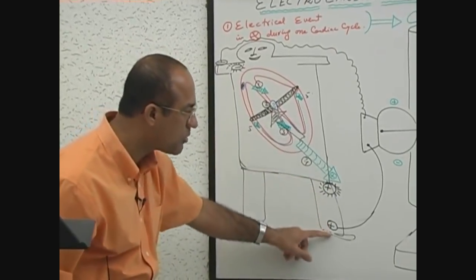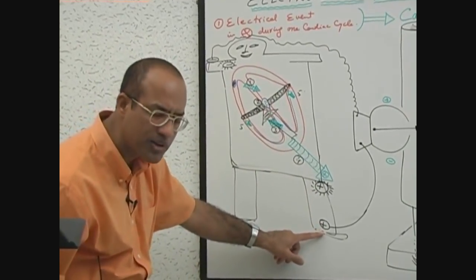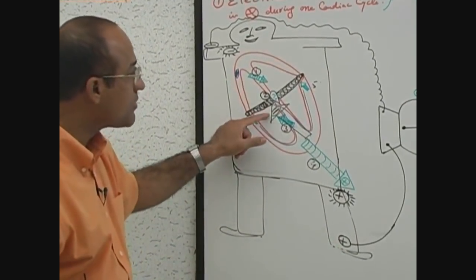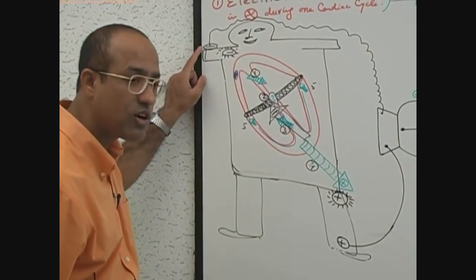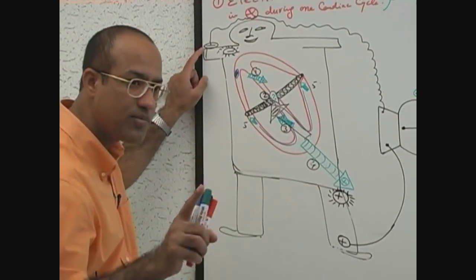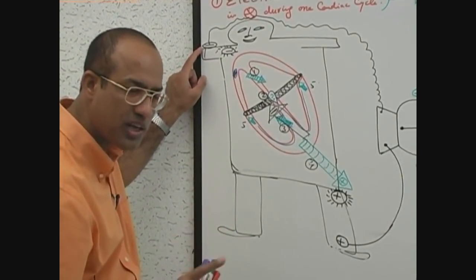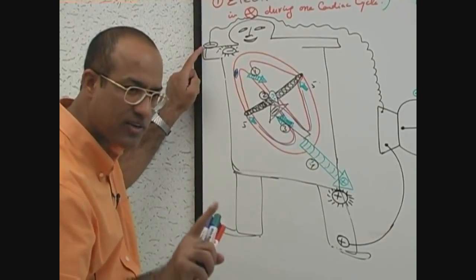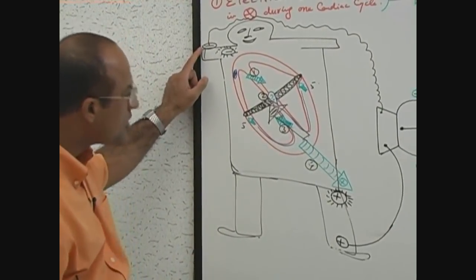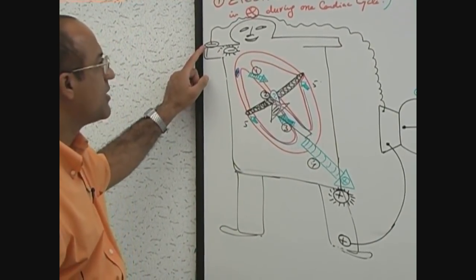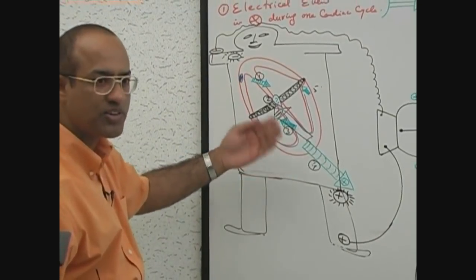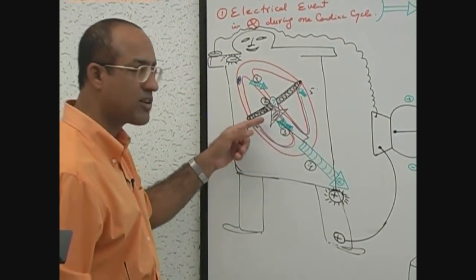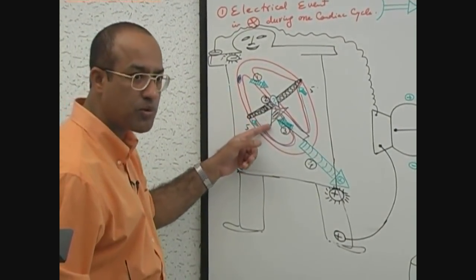The rule is: a positive charge moving to the positive electrode gives positive deflection; if a negative vector moves towards the negative electrode, deflection is again positive — because similar charge is moving towards the similar electrode. So during repolarization, the needle will move positively, but since repolarization is a moderate-speed process, it will move gradually.